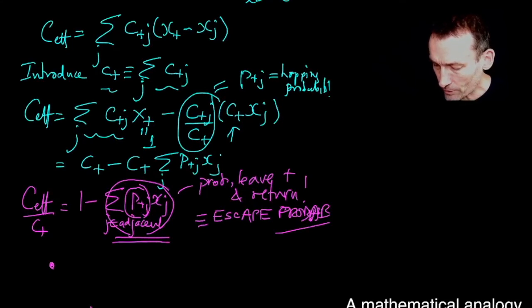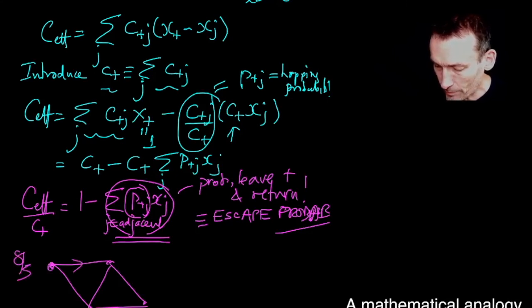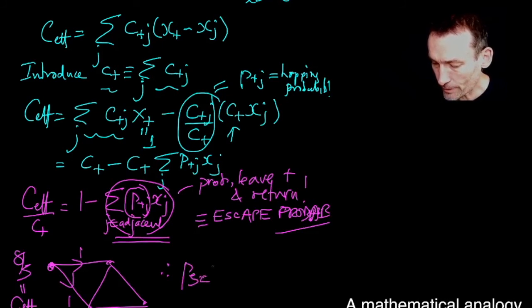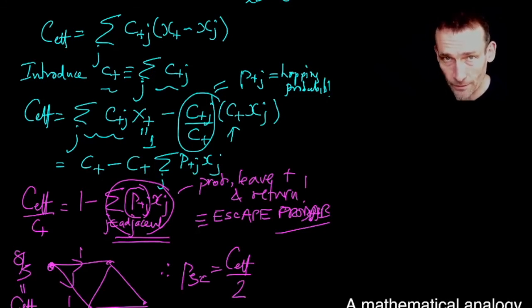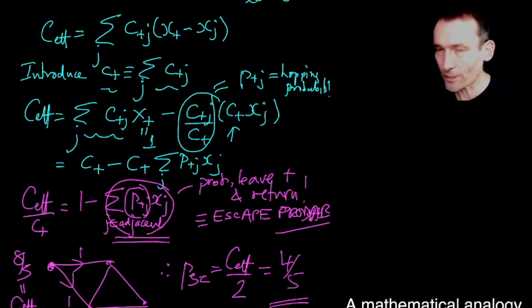And you remember, in our electric circuit, which looked like this, I found 8 over 5 to be my Ceff. And look, this was unit conductance, this was unit conductance, and there were two of them. So therefore, the escape probability from this node is Ceff divided by 2, because there's a total of conductance 2 leaving that edge, which is, of course, the 4 over 5, which is what I found, isn't it, when I did my numerical simulation using MATLAB. I found it's approximately 0.8.